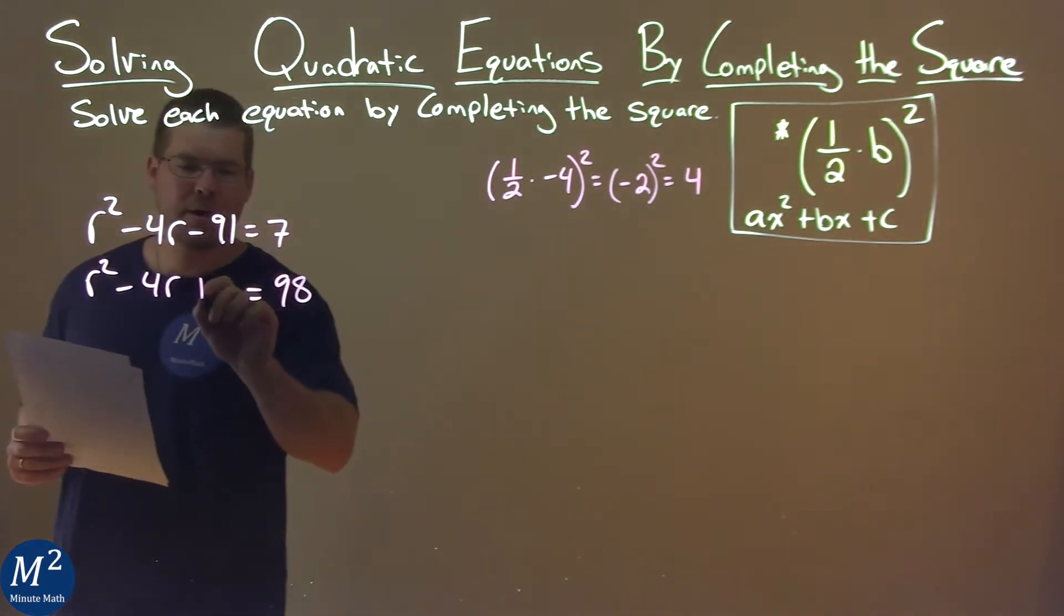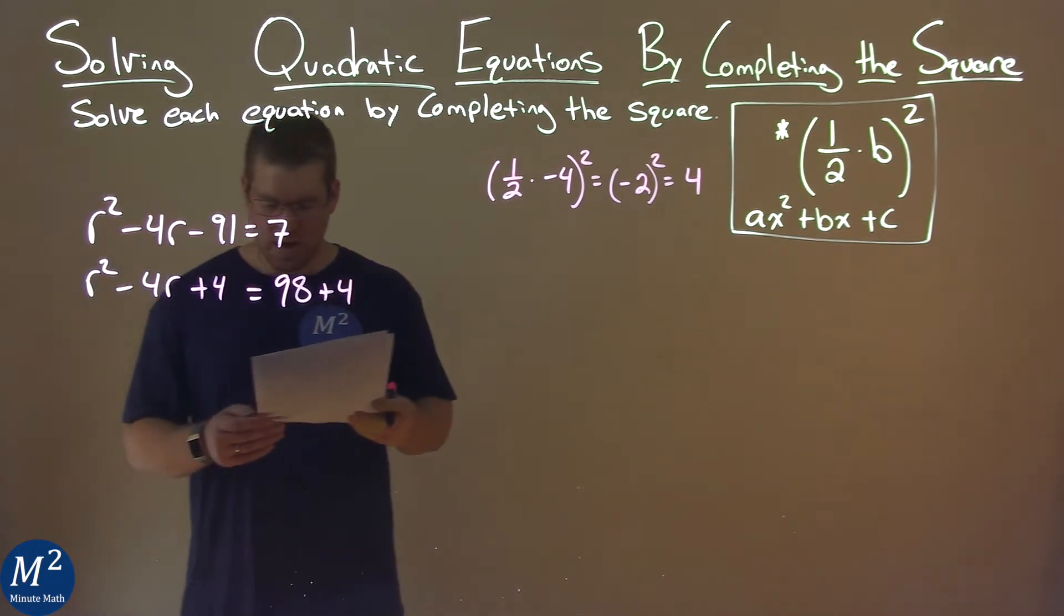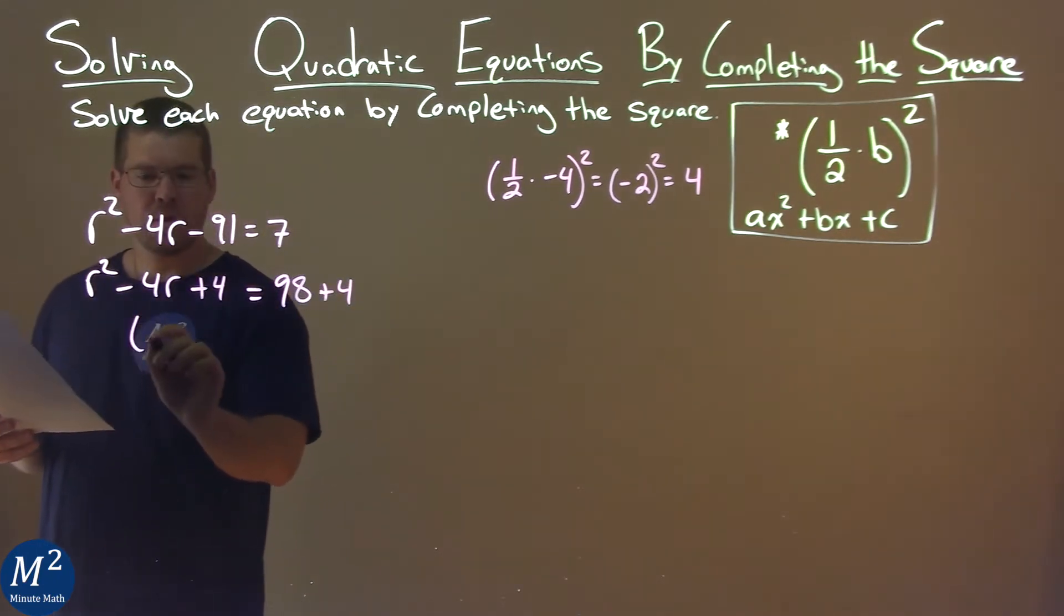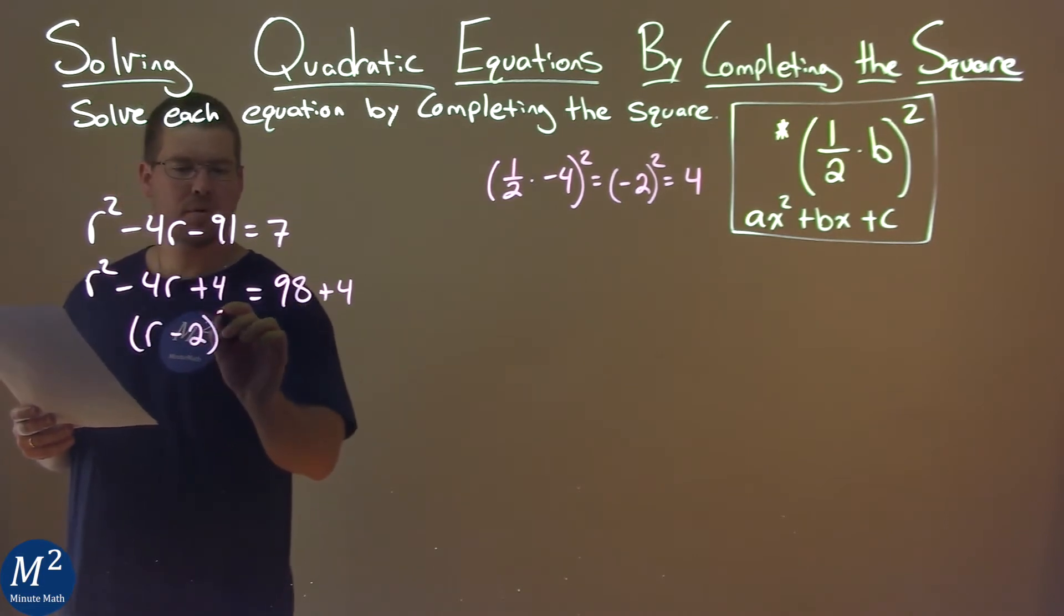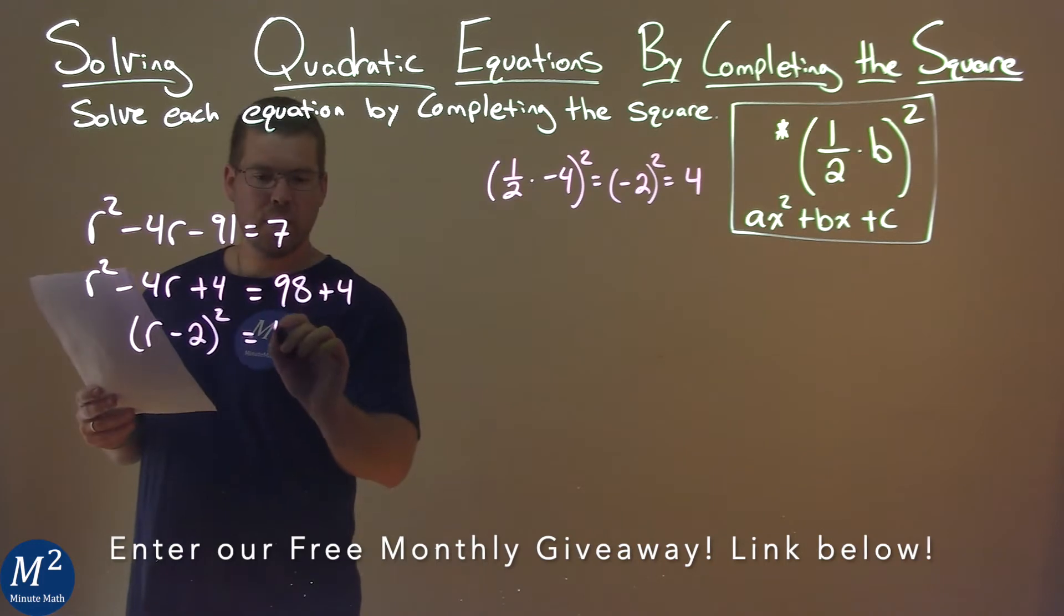So we're going to add 4 to both sides of the equation. The left-hand side becomes our perfect square: R minus 2, squared. 98 plus 4 is 102.